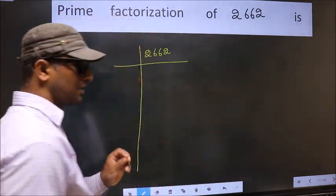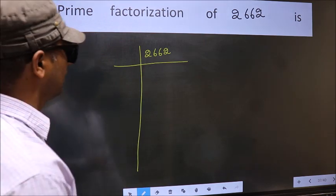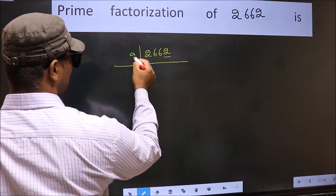2662. This is your step 1. Next, in this number, last digit 2 is even, so take 2.